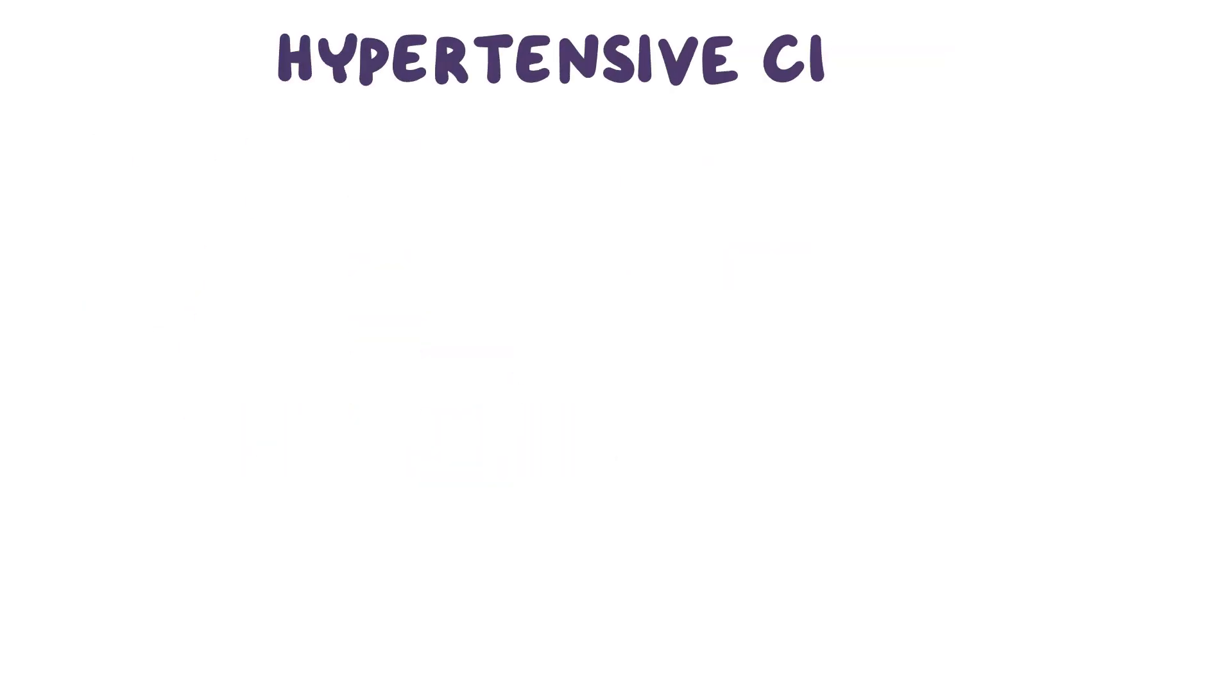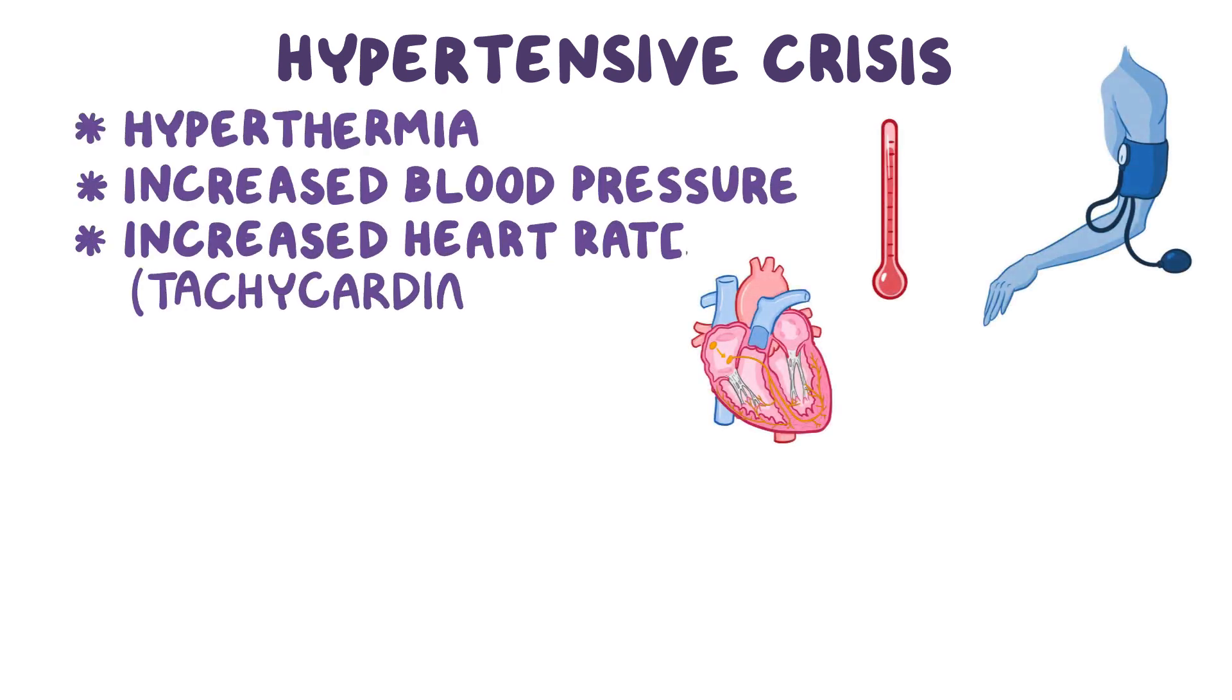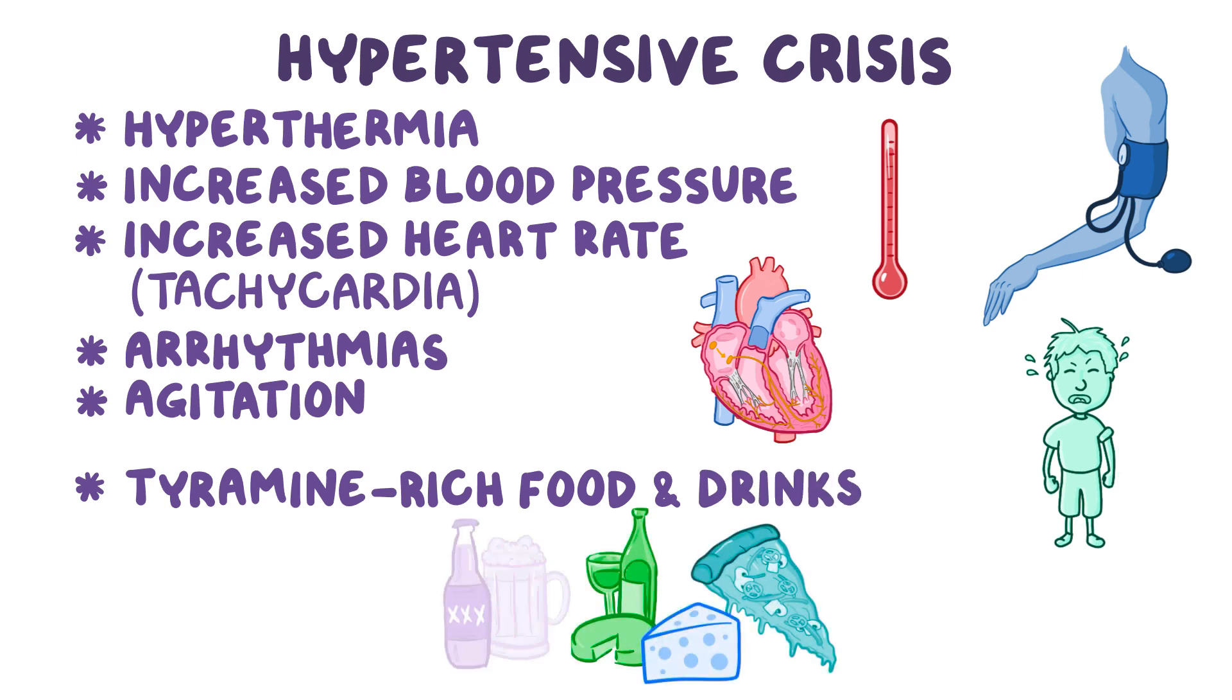On the other hand, hypertensive crisis is a condition characterized by hyperthermia, increased blood pressure, increased heart rate, arrhythmias, and agitation. It's commonly seen in individuals that combine MAOIs with tyramine-rich food and drinks, such as cheese, wine, and beer.